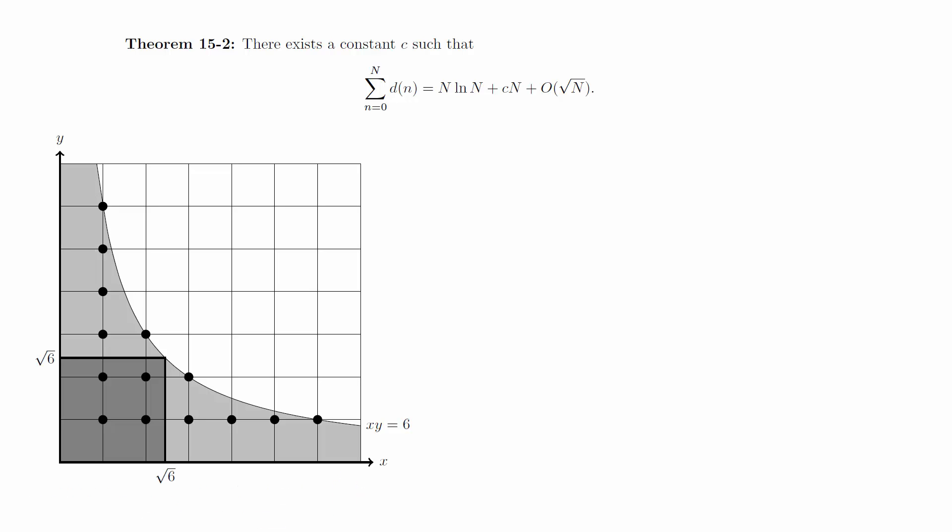We can break that region into three parts. The first part is the square of side length square root of n, whose corners touch the origin and the point root n, root n.